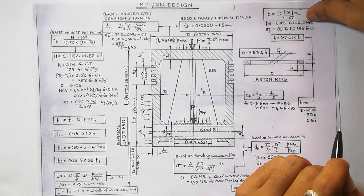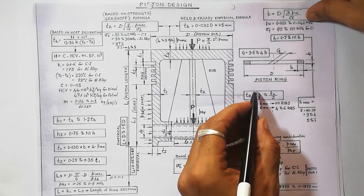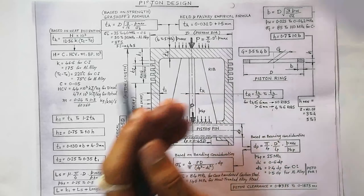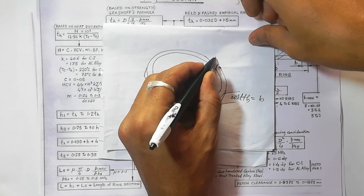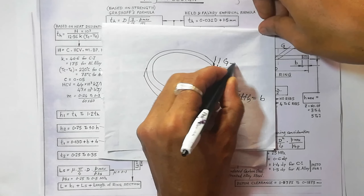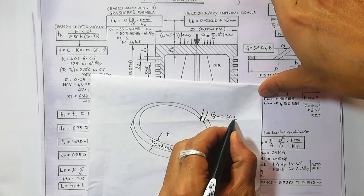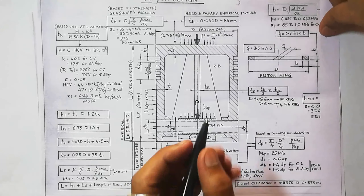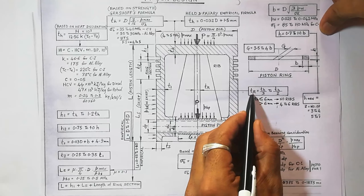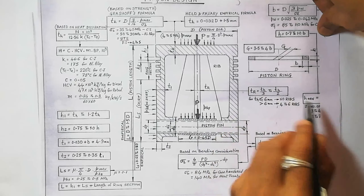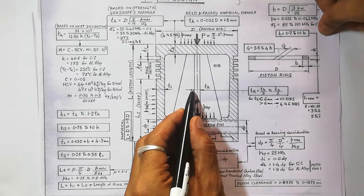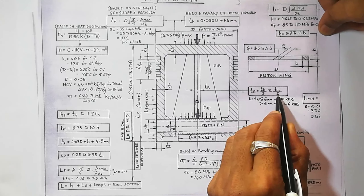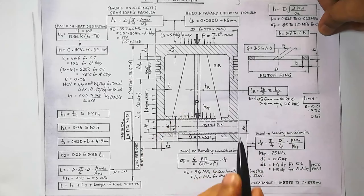The gap g at the opening of the piston ring ranges from 3.5 to 4b. The width of the piston ring Tr is equal to TH/3 to TH/2 — within that range we consider the piston ring dimensions.